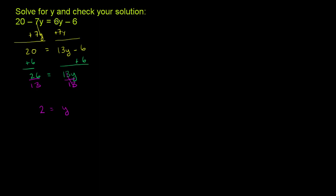If I had subtracted 6y from both sides, I would have got a negative 13 on the left-hand side, which would have been a legitimate thing to do. Let me just show you what I'm talking about. So I could have done the problem this way. I could have said 20 minus 7y is equal to 6y minus 6.